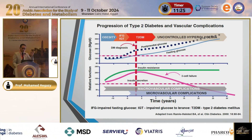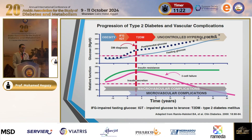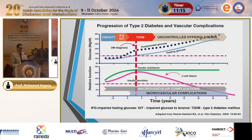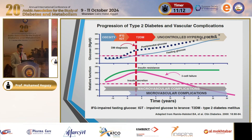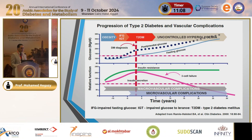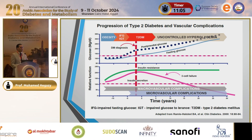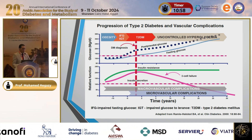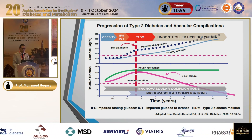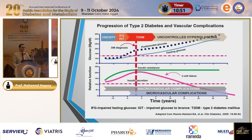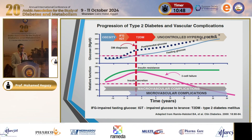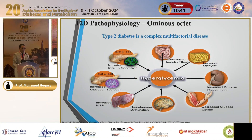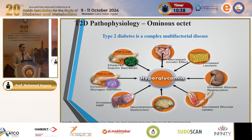When we discuss diabetes pathogenesis, we talk about insulin resistance and decreased beta cell insulin secretion, which leads to hyperglycemia. These pathological factors start years before diagnosis. The microvascular complication diagram shows that while complications are typically noted at diagnosis, they actually begin years before the diagnosis is made.